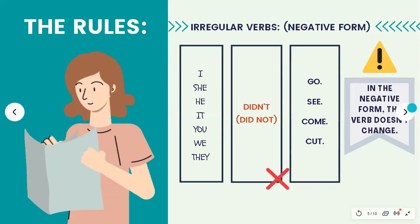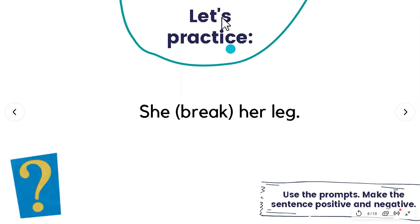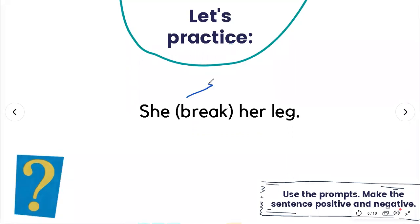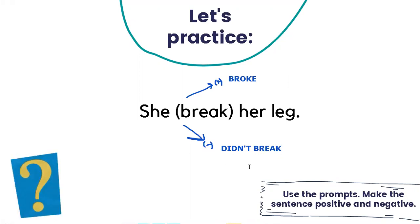So, let's practice a little bit, because this is a very short topic. 'She break her leg' — you need to make a positive and a negative sentence here. Vamos a hacer una oración positiva y una negativa. El pasado de 'break' es 'broke', so: she broke her leg. ¿Y cómo me quedaría en negativo? She didn't break — porque en el negativo el verbo no cambia, solo agrego didn't. Pero en la forma positiva, como es un verbo irregular, cambia a 'broke'.